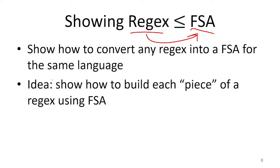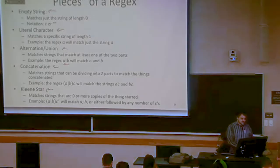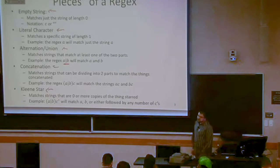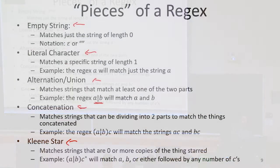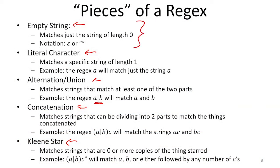The strategy is to show that every piece that a regular expression is allowed to have, we can build an automaton that does the same thing. For each piece — empty string, literal character, and so forth — I'll show that I can take that piece and make a finite state automaton for it.